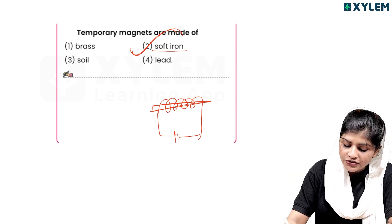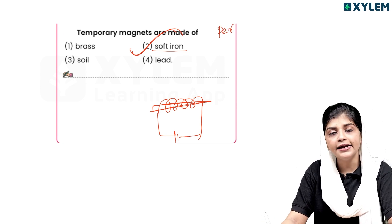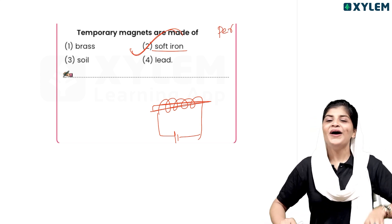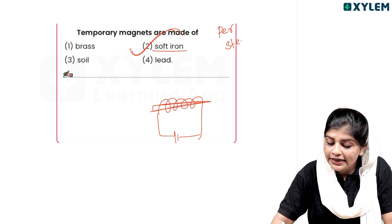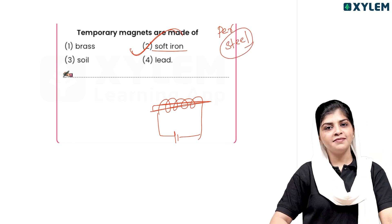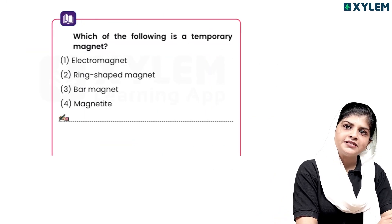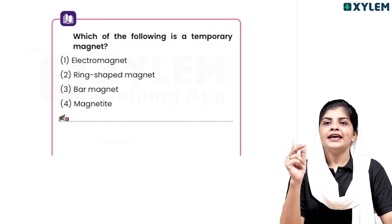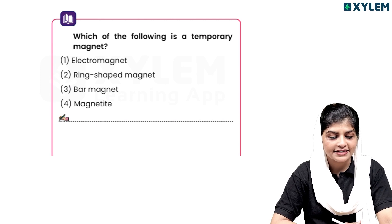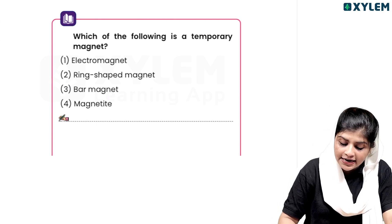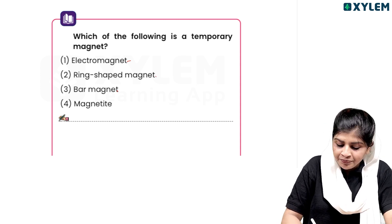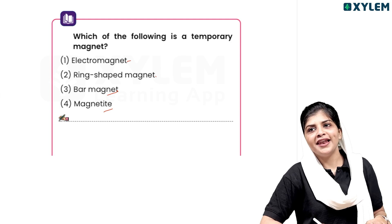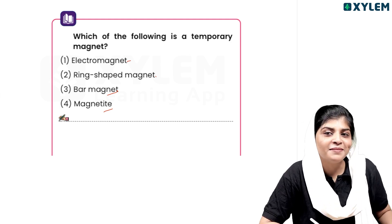Temporary magnets are made of soft iron. If you ask about permanent magnets, permanent magnets are made of steel. Which of the following is a temporary magnet? Electromagnets — that is the temporary magnet.